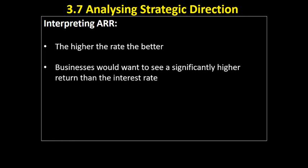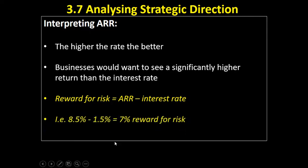Businesses would want to see a significantly higher return than the interest rate. We can calculate the reward for risk as the average rate of return minus the interest rate. For example, if the interest rate is 1.5 percent and our average rate of return is 8.5 percent, we subtract 1.5 percent. If the project was only returning 2 percent, the reward for risk would be just 0.5 percent. On this project, the reward for risk — compared to doing nothing and keeping money in the bank — is 7 percent.